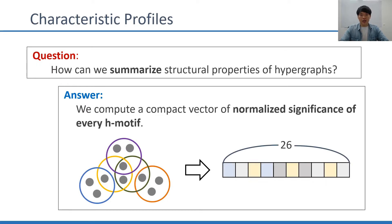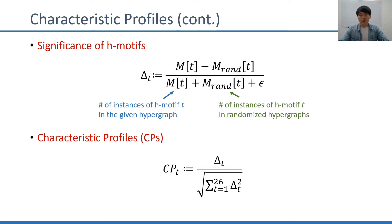Another expected question is how can we summarize the structural properties of each hypergraph? This is an important task for comparing hypergraphs of different sizes. Here, we propose to compute a compact vector of normalized significance of every H-motif. We show how we measure the significance of each H-motif in a hypergraph by comparing the occurrences of each H-motif with its occurrences in randomized hypergraphs. We then compute characteristic profiles, or CPs, by normalizing the significance of every H-motif. We will show that CPs effectively capture local structural information of hypergraphs.